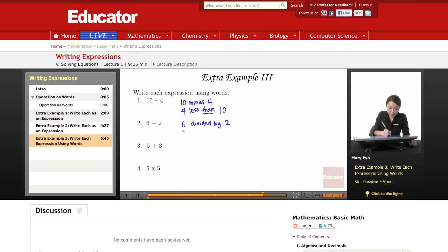Or you can say the quotient, the quotient of something and something. So that'll be 6 and 2.